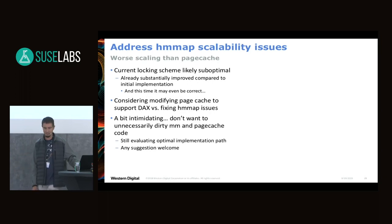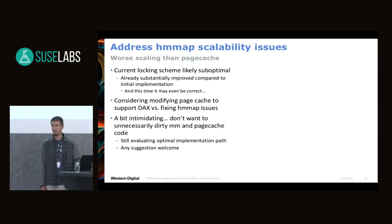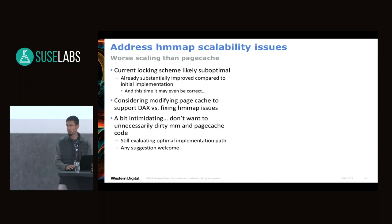There are scalability issues with HMMap — the main problem is a suboptimal locking scheme compared to the page cache. We've substantially improved it from the initial implementation. The big question is whether to keep optimizing HMMap's locking to match or beat the page cache, or to bring this functionality into the page cache itself — making the page cache use infrastructure similar to HMMap. We're seriously looking at that direction, though we want to avoid dirtying the page cache and memory management code too much. If you have suggestions, please contact us.